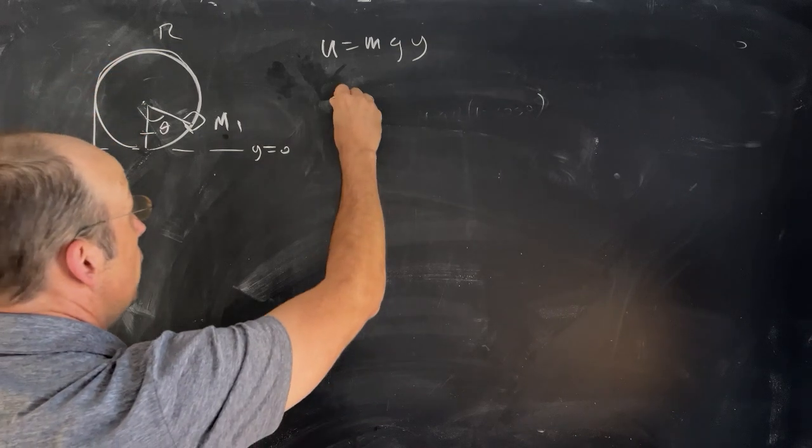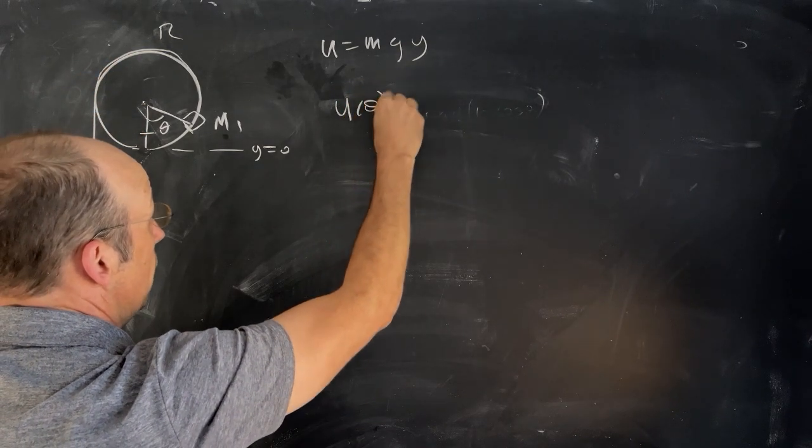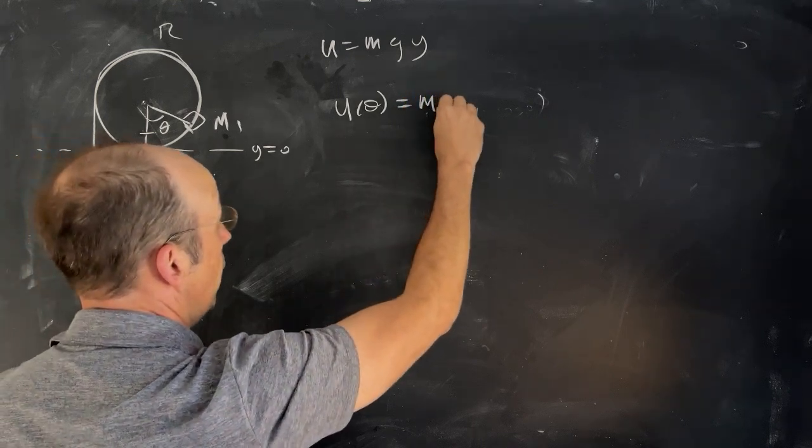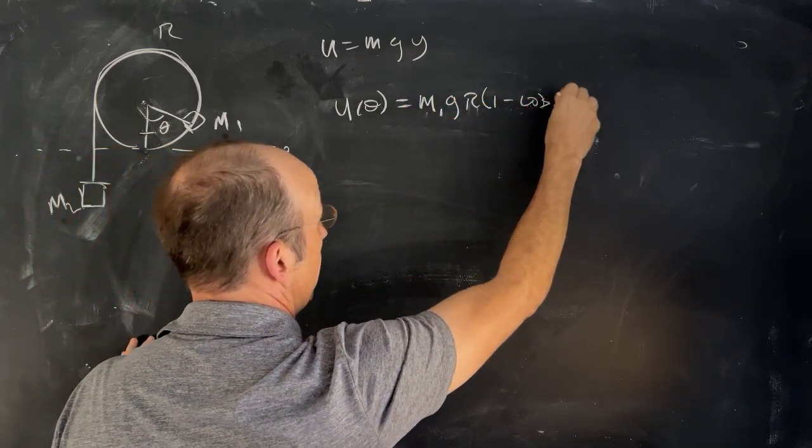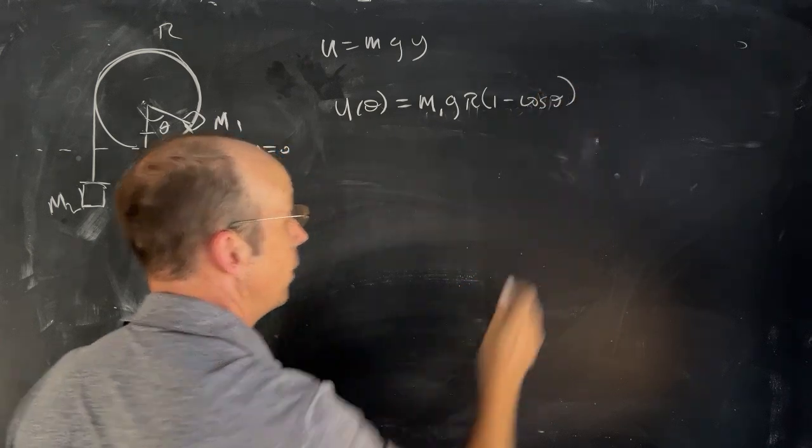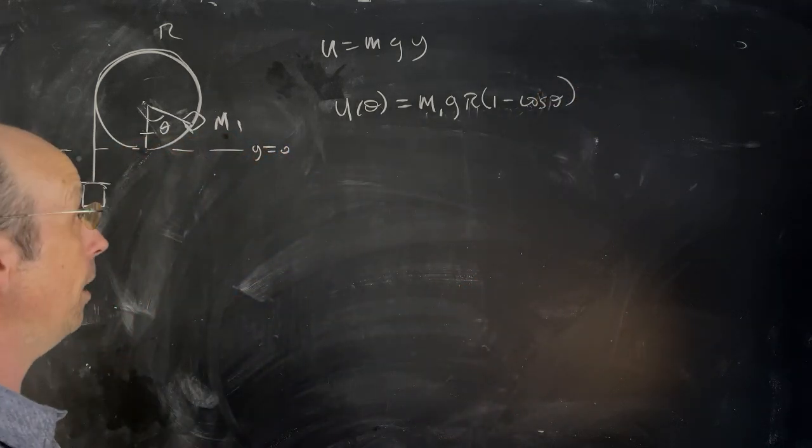So I can write the potential energy for that one as a function of theta. It's going to be m1 gr times 1 minus cosine theta. I don't know what happened there. There's a leftover thing. So that's that potential.